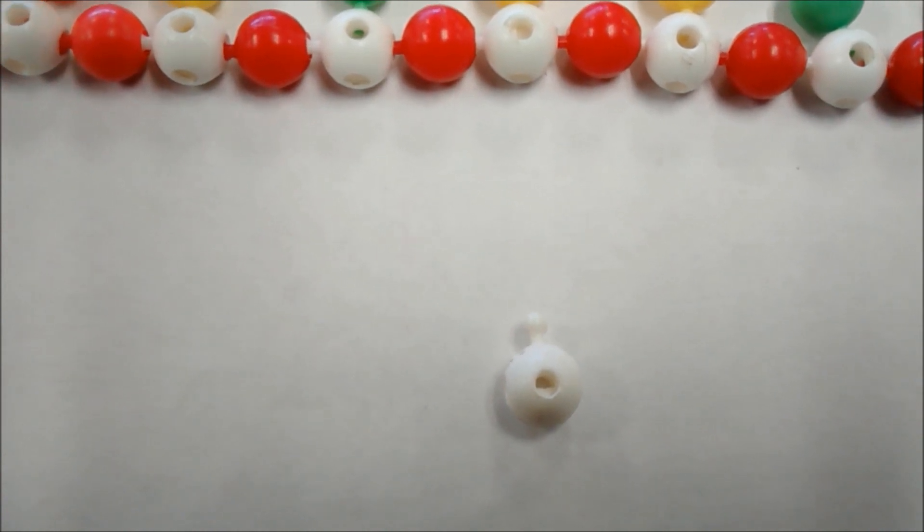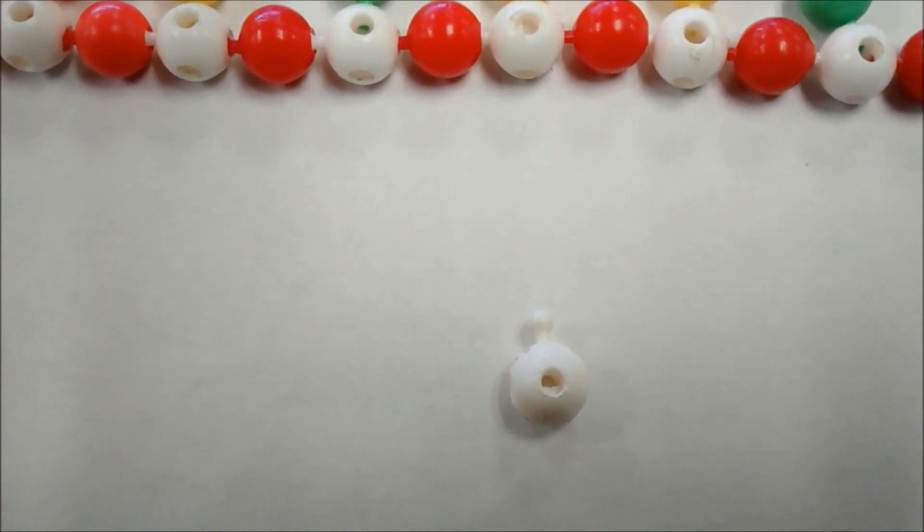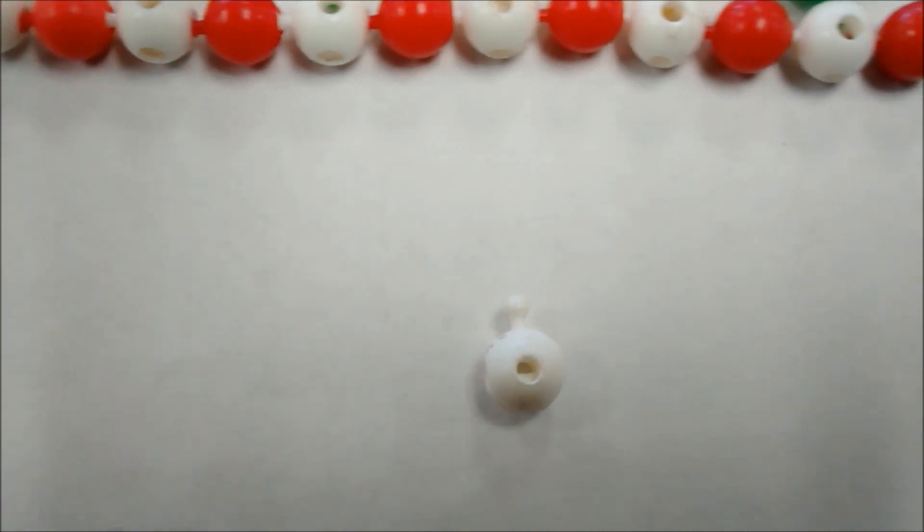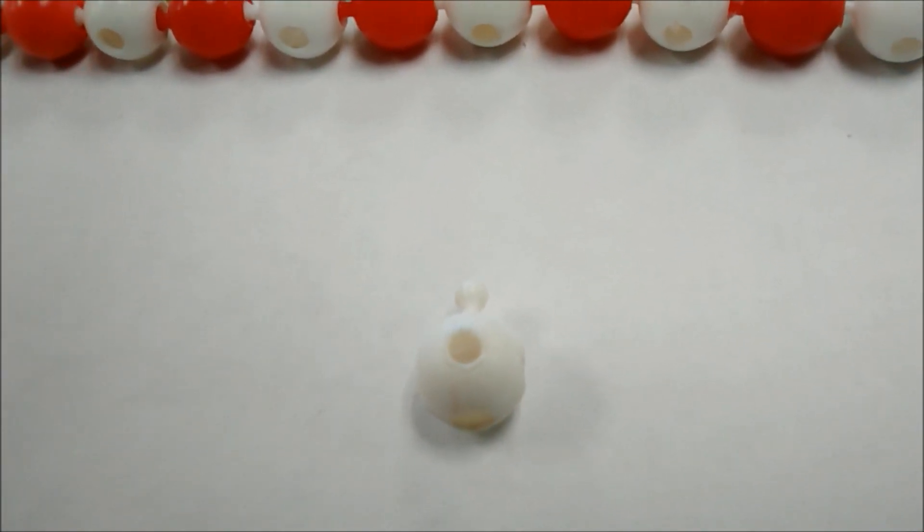So on this model, the knob that's pointing up represents the three prime carbon, whereas the little dent in the bottom, the hole in the bottom, represents the five prime carbon. So we have to keep that orientation in our minds.